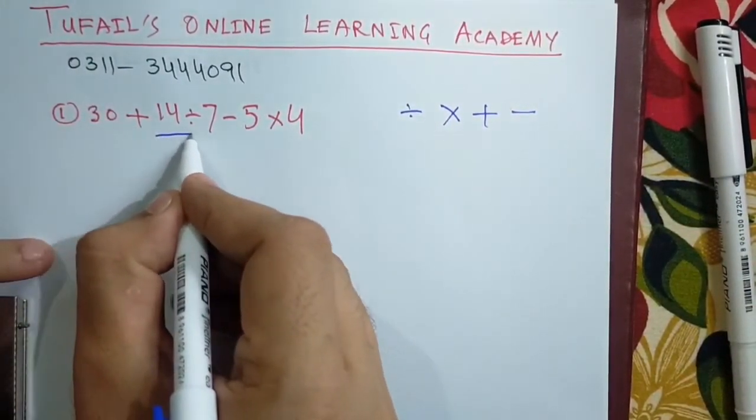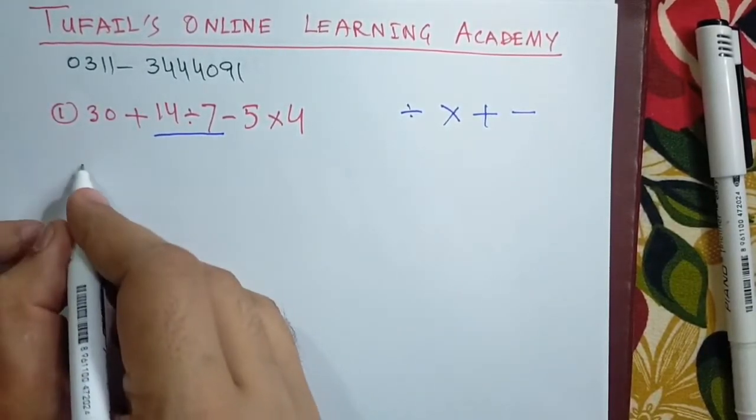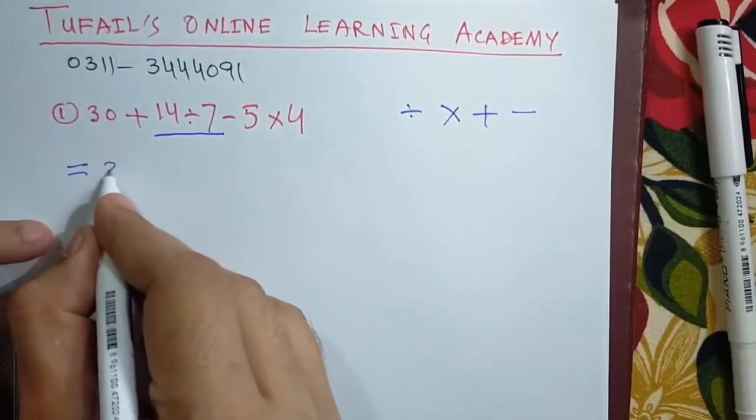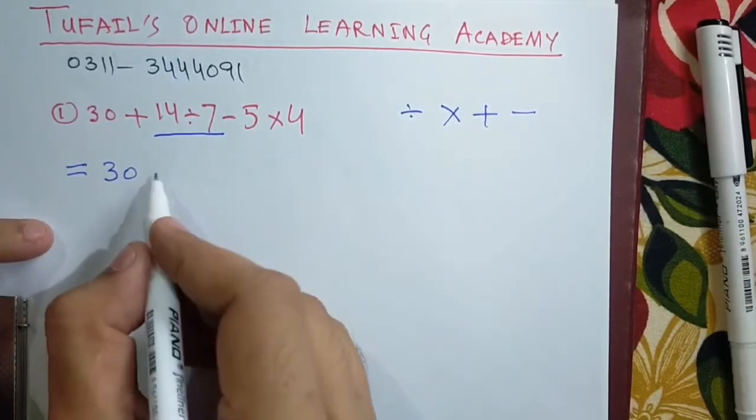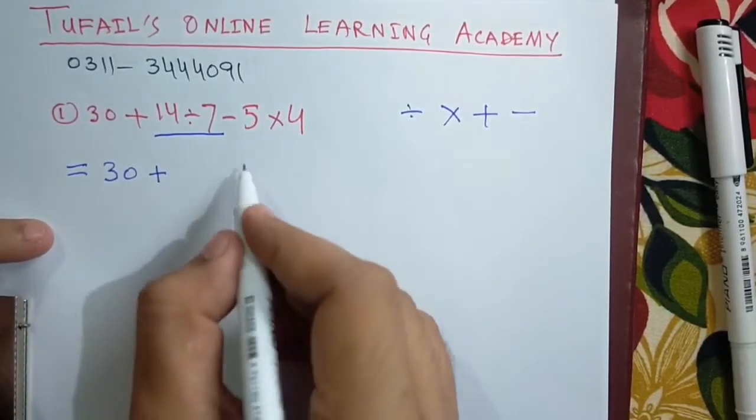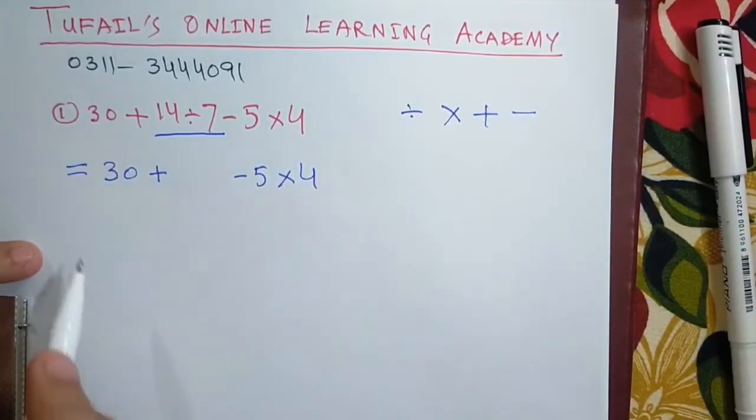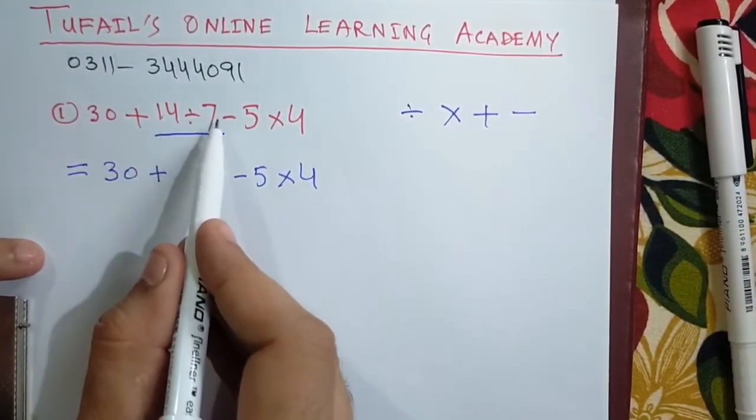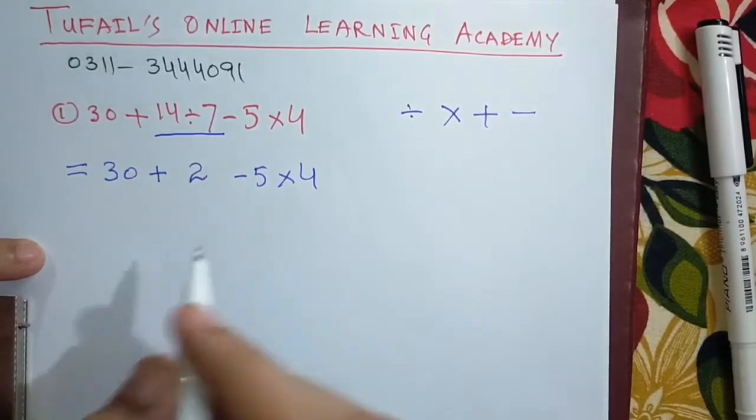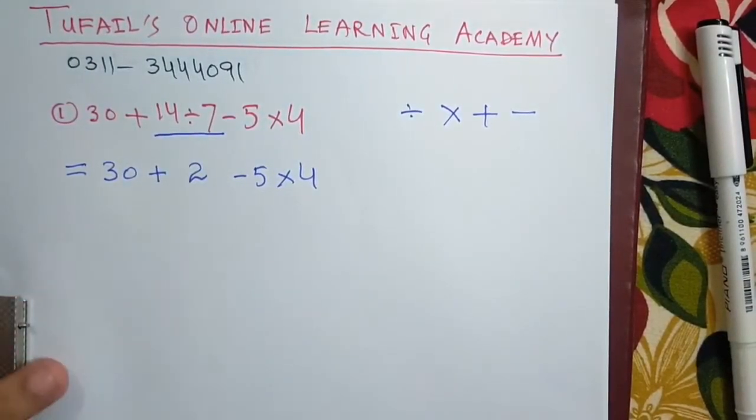So there's division between these two numbers, 14 and 7, and the rest of the operations and numbers have to be put same as it is, okay. Now if we divide 14 by 7, this becomes 2. The expression is simplified a bit.